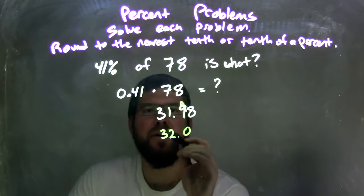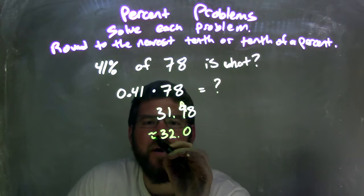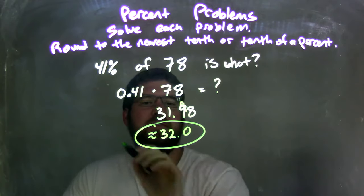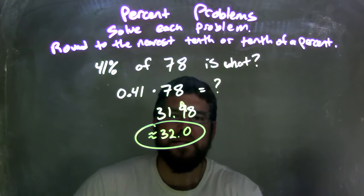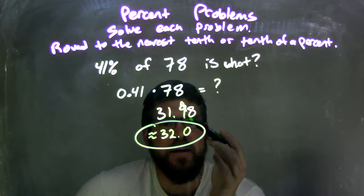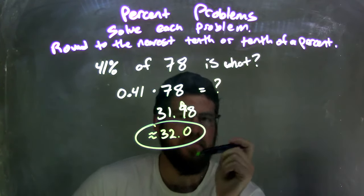So our final answer here, and it's rounded, so we can put approximately, I'm sure your teacher probably doesn't care, to be honest. It's just nifty for me. But our final answer is approximately 32.0. And what that 0 does, it really shows that you did round to the nearest tenth. All right.